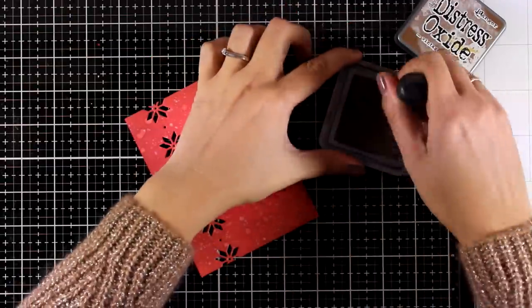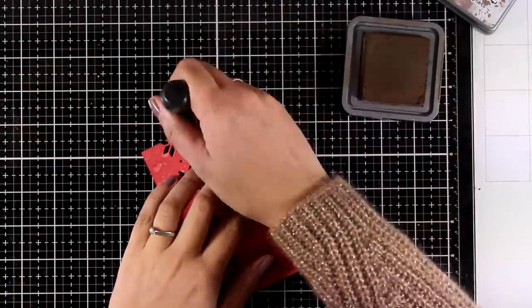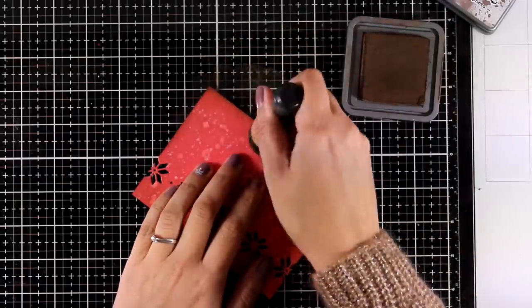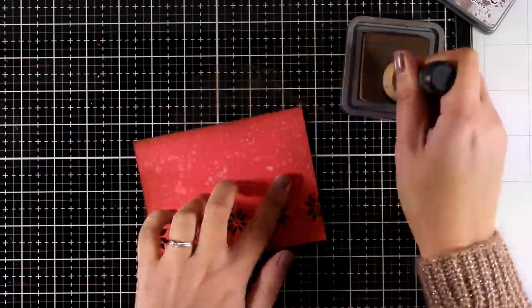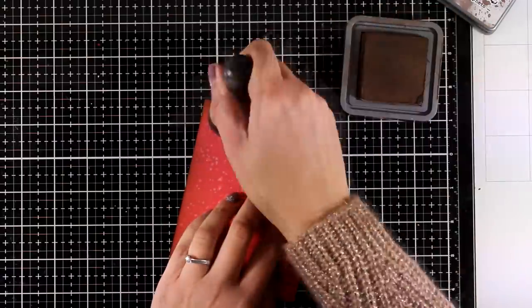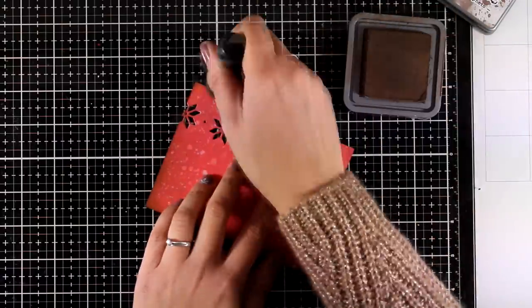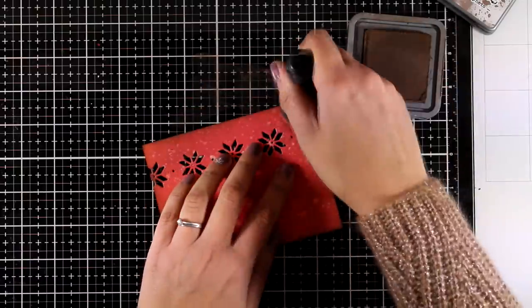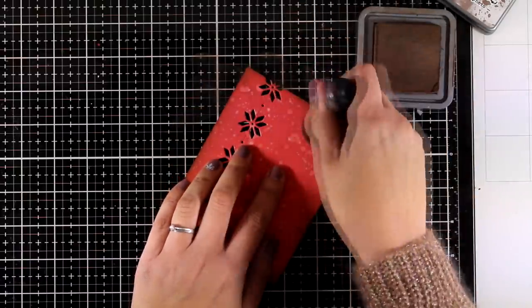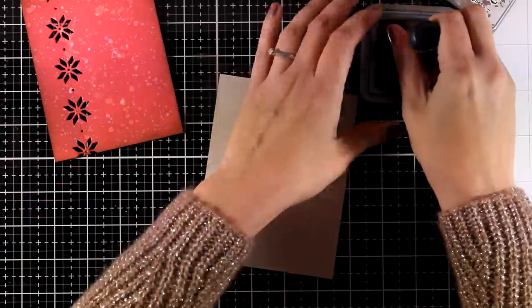Since I'm going for a vintage look and feel for this card I'm going to ink up the edges with Vintage Photo. I'm just touching very lightly the edge of the card by using my blending tool. I don't want to overdo it with brown. I just want a touch of brown only at the far edge.